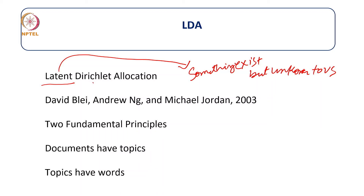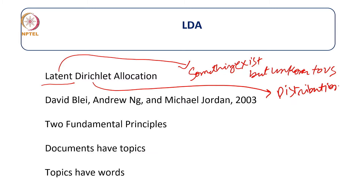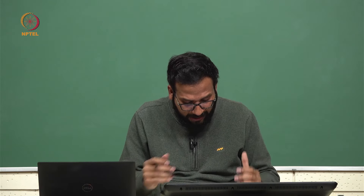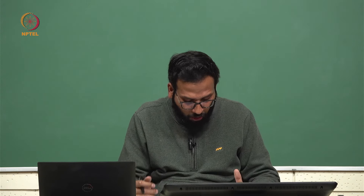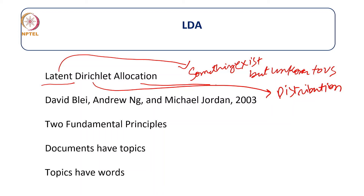Dirichlet refers to the distribution — the distribution of words and topics. Allocation means that based on the distribution of topics and words, we allocate topics to documents and words to topics. LDA was given by David Blei, Andrew Ng, and Michael Jordan in 2003. In simpler words, we aim to identify the topics and the words of each topic present in the text data, and after identification we label each document with its topics.